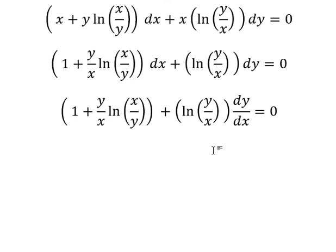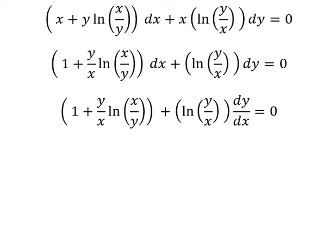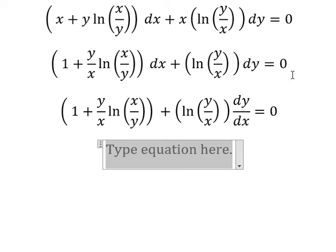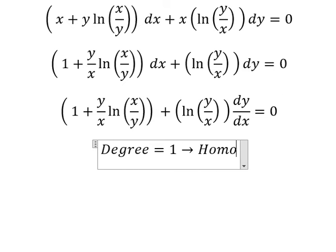Next we have y over x, x over y - they are reciprocals, number one. So this is about homogeneous.